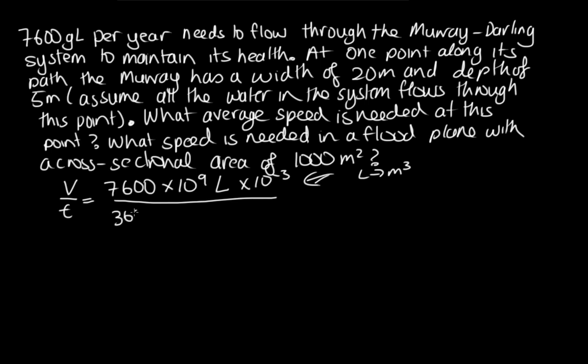In a day, there is 24 hours. In an hour, there's 60 minutes. And then in a minute, there's 60 seconds. So this is going to give us the flow rate in meters cubed per second. So entering this into the calculator, we get 241 meters cubed per second is the flow rate.